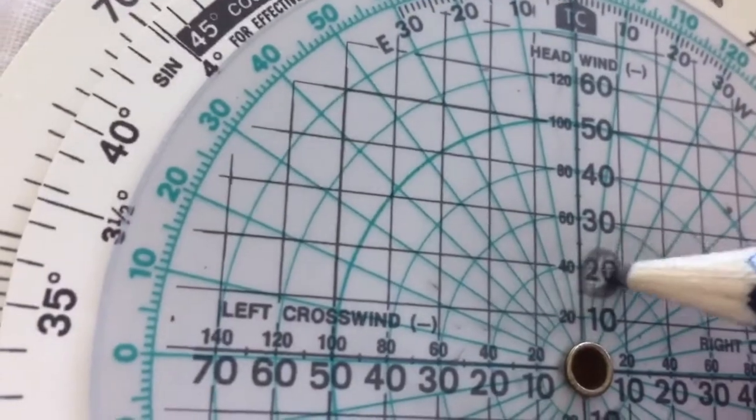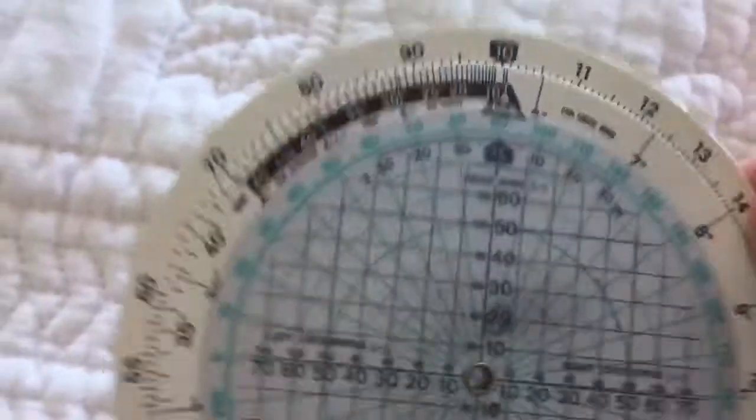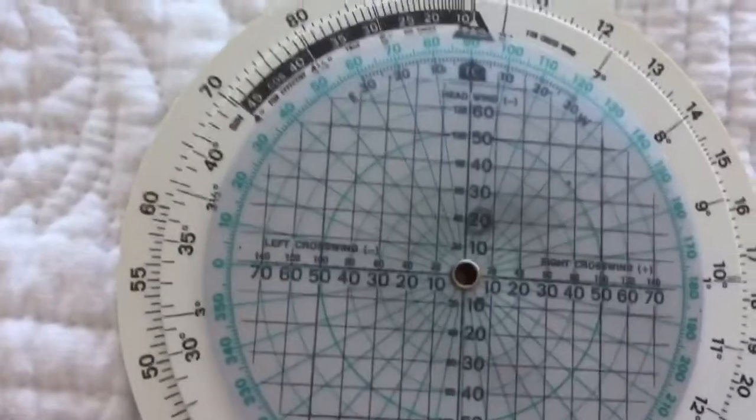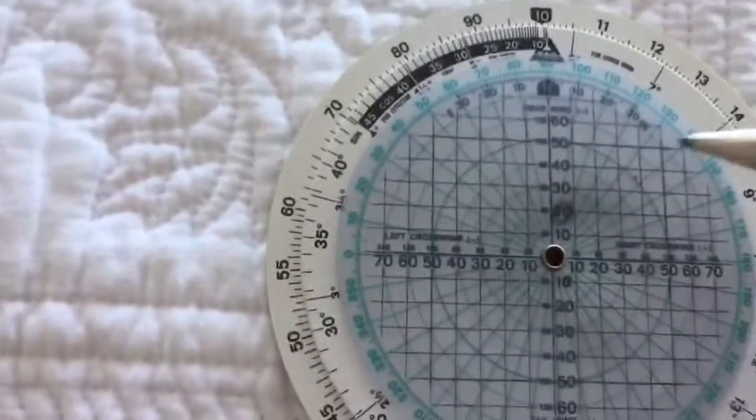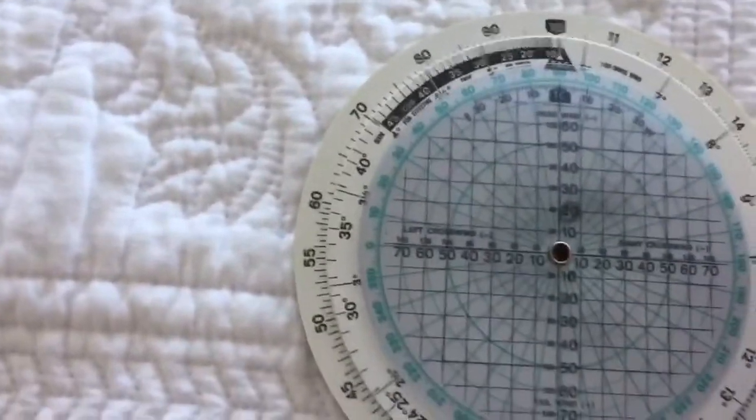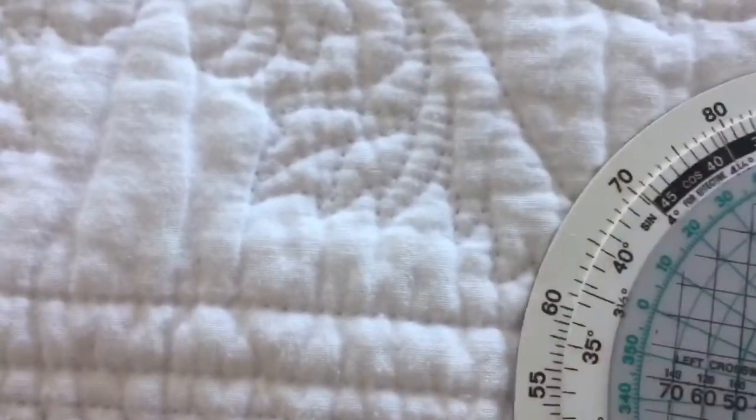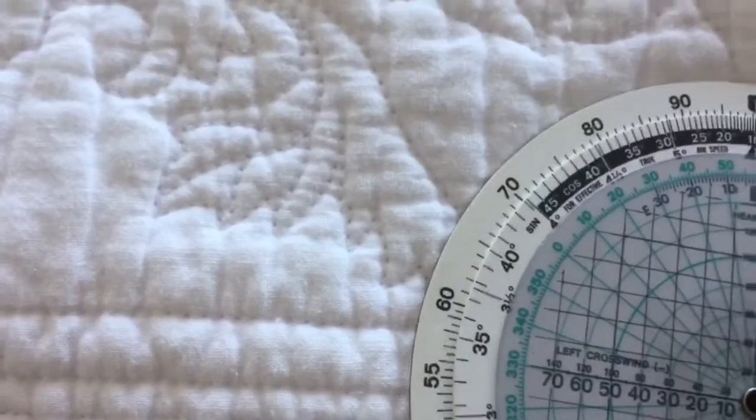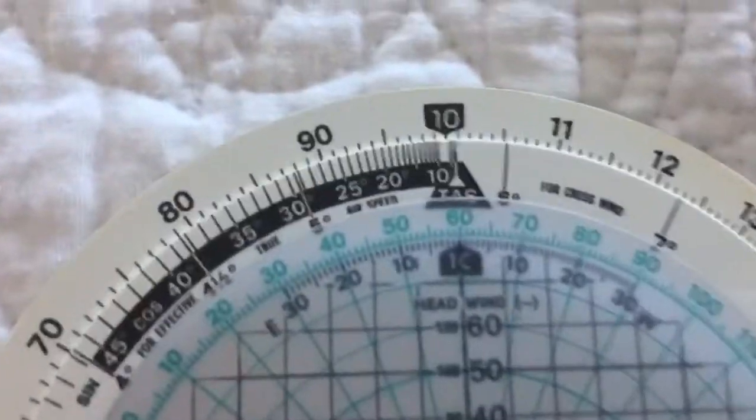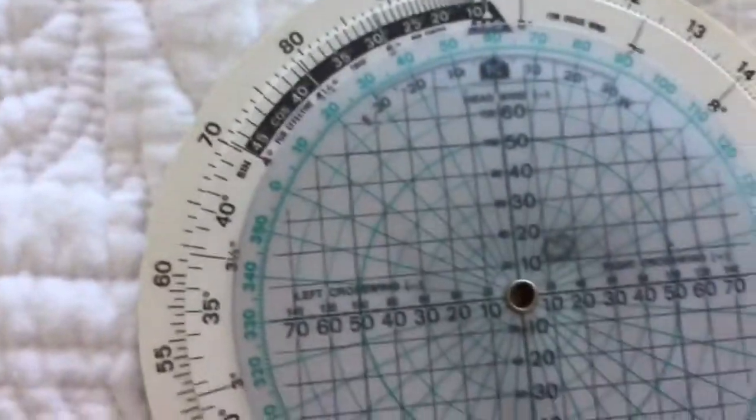The reason I draw a circle rather than a dot is it's very hard to find your dot once you start moving it. Now we turn our green scale to whatever our intended heading is going to be. Say our intended heading is going to be 060.